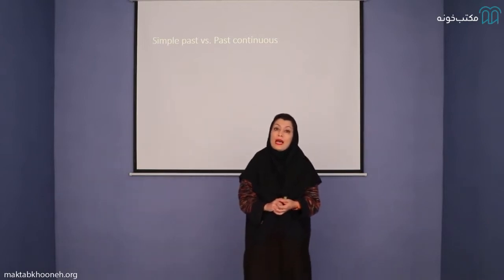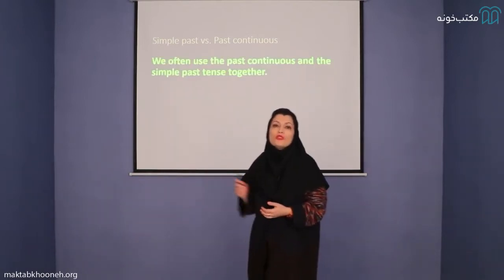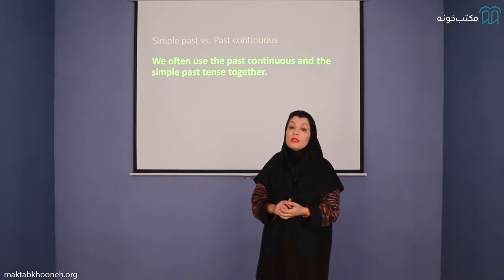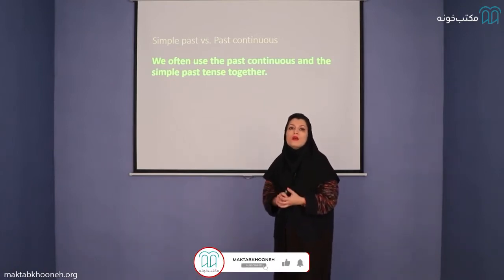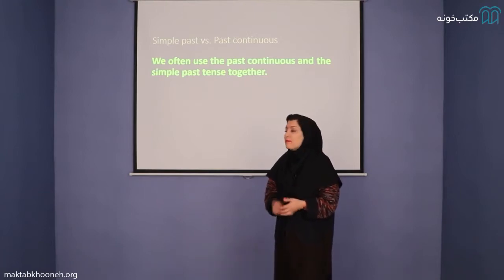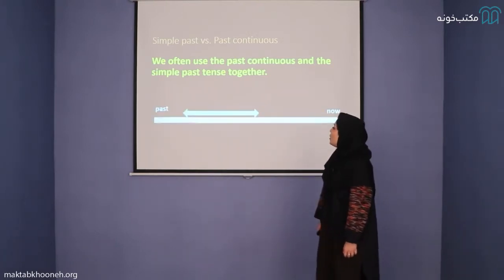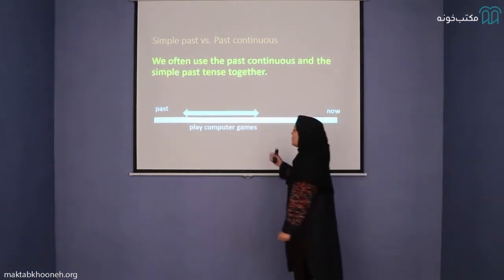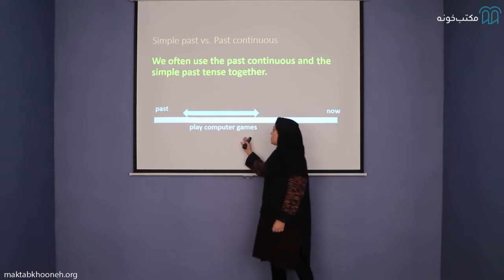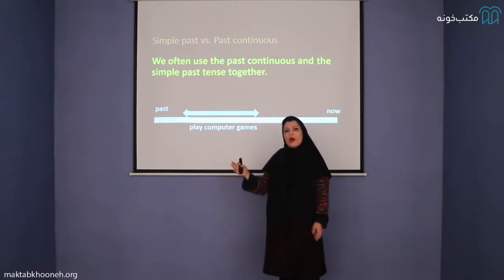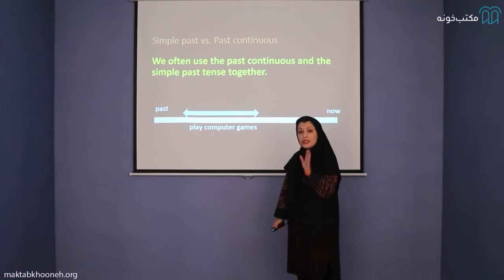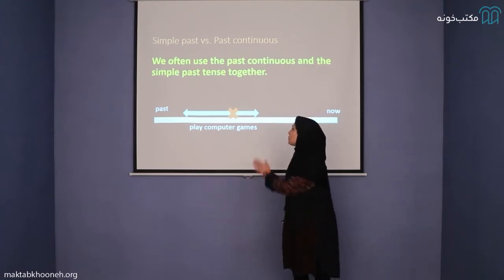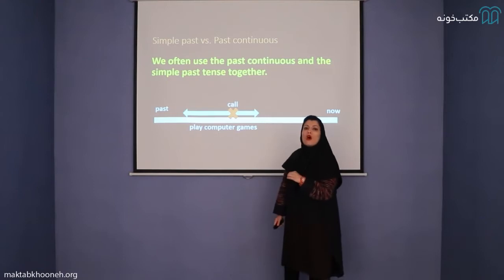If we're talking about events happening in the past, we can use simple past and past continuous. We often use simple past and past continuous together when talking about events that happened in the past. As you can see, one action is in duration — imagine playing computer games: I was playing computer games. Suddenly, another action interrupts the first action. Somebody called.